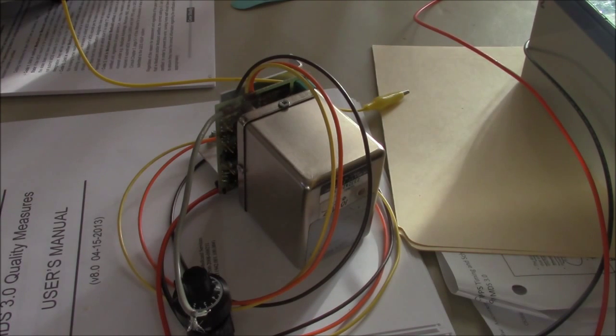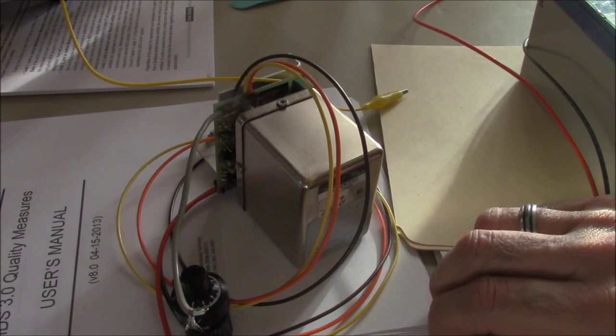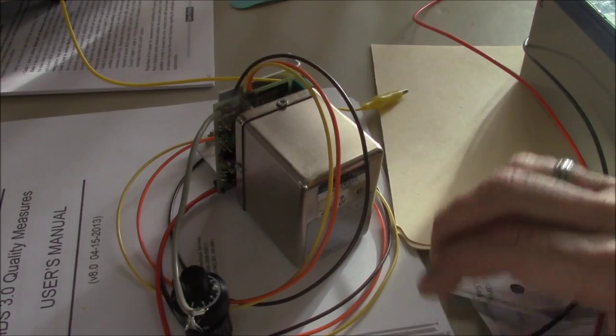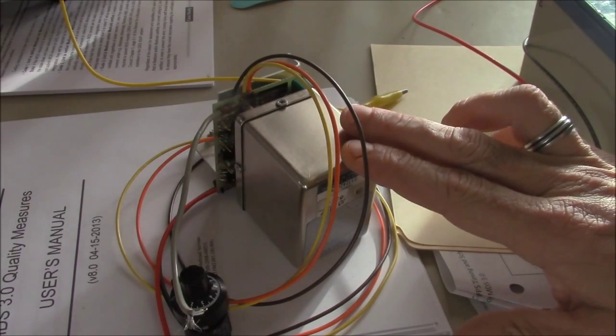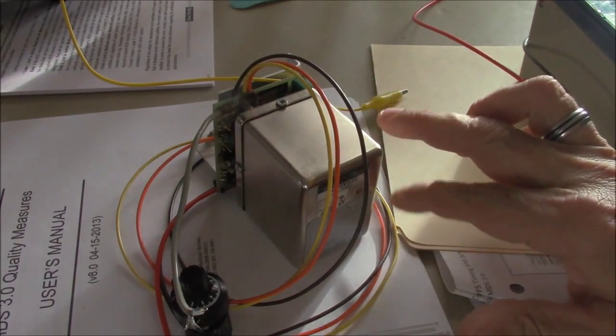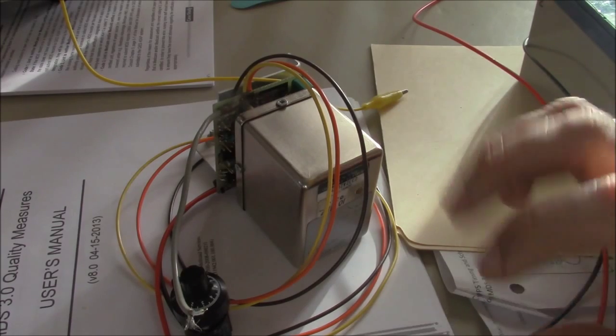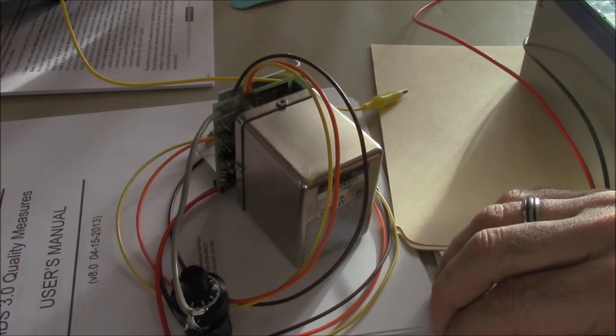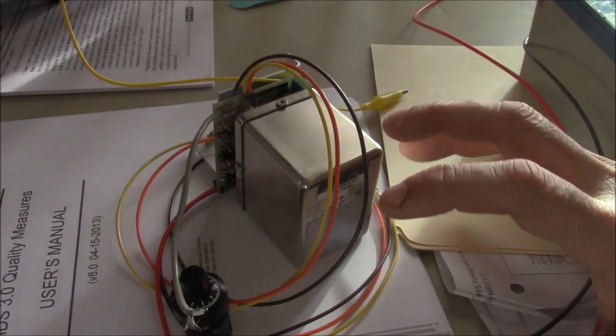What we're going to do today is just zero beat this against WWV and get it lined up. This has some pretty nice features on it - it's ovenized, which means it has a heater that stabilizes the oscillator inside, and there's also a temperature control so it tries to maintain a constant temperature.